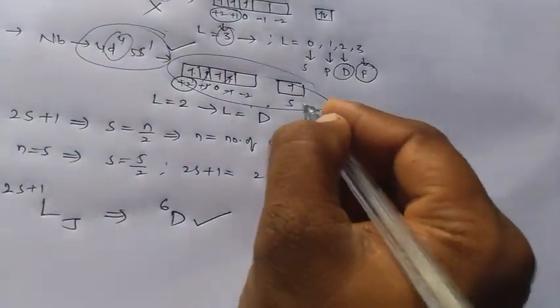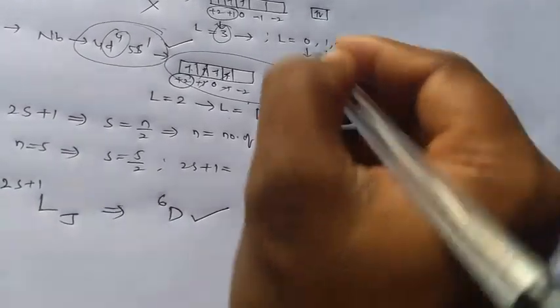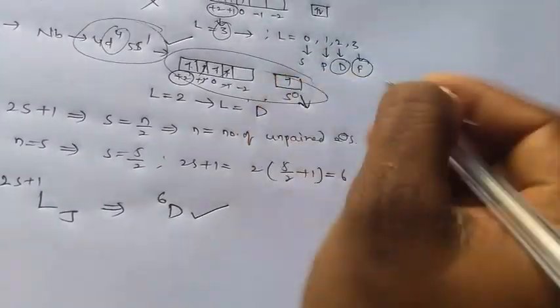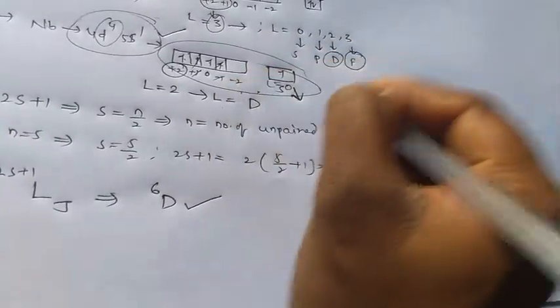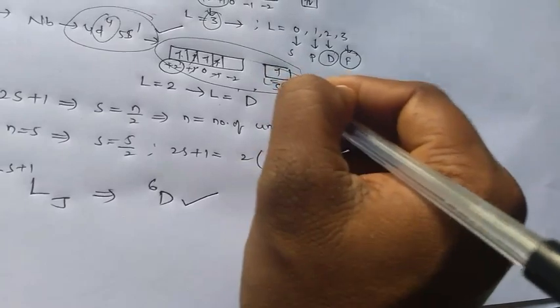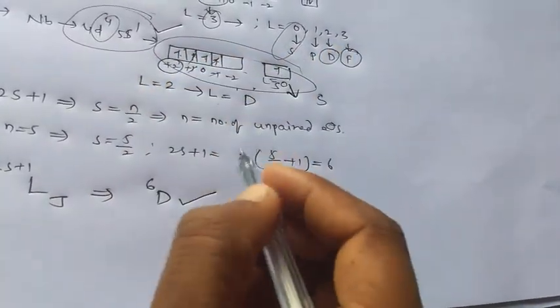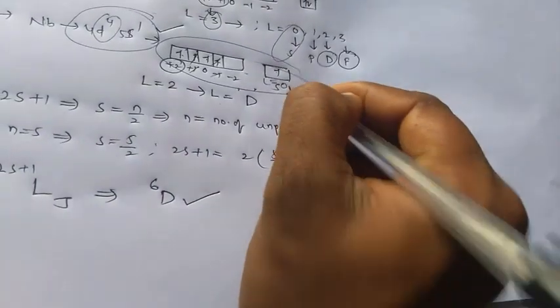And if you observe for this, singly, for S orbital we know that here L is equal to 0. And hence we have S term symbol, because L is equal to 0. And we have 5 unpaired electrons. So from that we can get 6. And here S is 6.